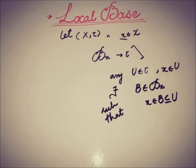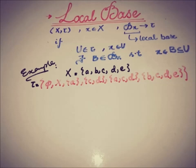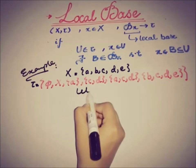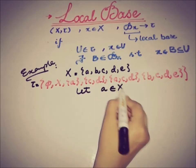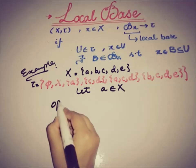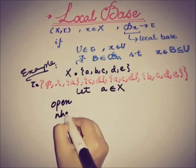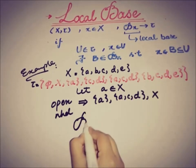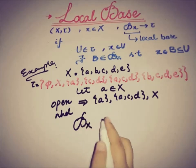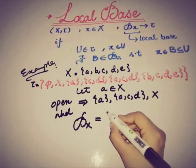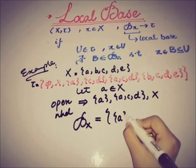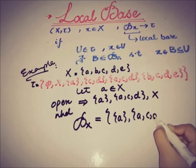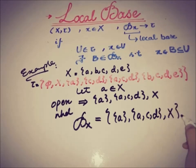Let's see an example. Here the set X = {a, b, c, e} and topology tau. If we take the element a from the set X, then the open neighborhoods of a are: {a}, {a, c, d}, and X. So we can form a sub-collection Ba equal to {a}, {a, c, d}, and X.